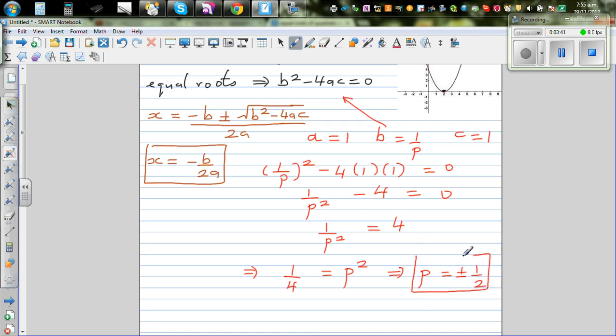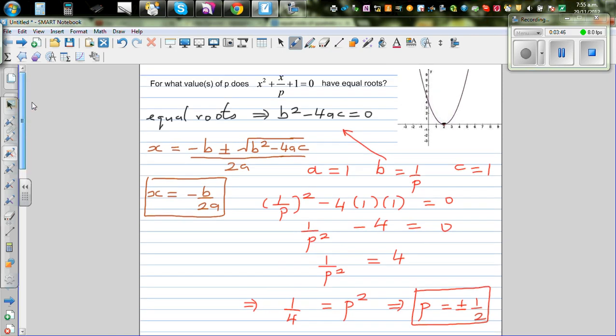So p has to be - when p is plus or minus 1 half, this will become a perfect square.